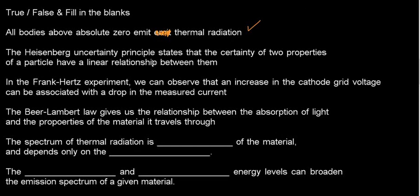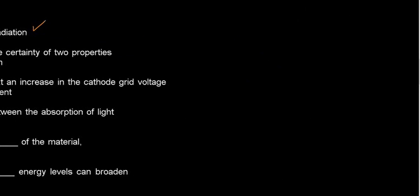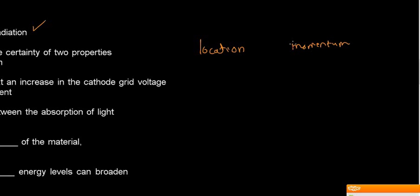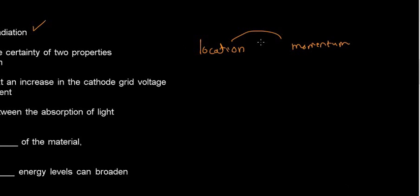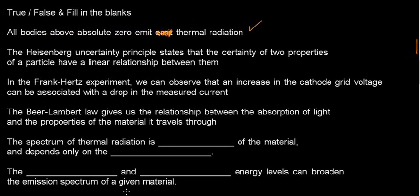The Heisenberg uncertainty principle states that the certainty of two properties of a particle have a linear relationship between them. What we really mean with the Heisenberg uncertainty principle is that, taking location and momentum as the two properties, the more I know one property, the less I can know the other with certainty. That is an inversely proportional relationship — not linear. So this statement is FALSE.